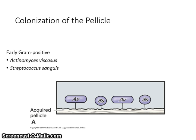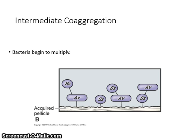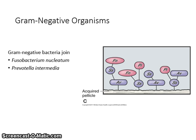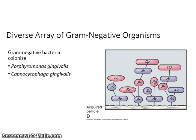Early colonizers include gram-positive bacteria such as Actinomyces viscosus and Streptococcus sanguis. The bacteria then begin to multiply. Gram-negative bacteria join in, including Fusobacterium nucleatum and Prevotella intermedia. Later, gram-negative bacteria such as Porphyromonas gingivalis and Capnocytophaga gingivalis colonize.